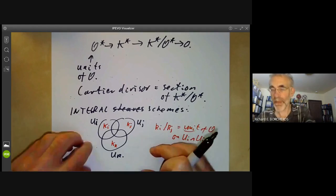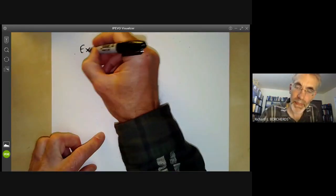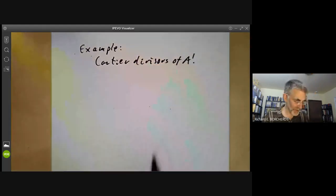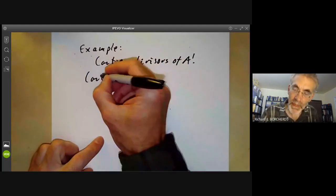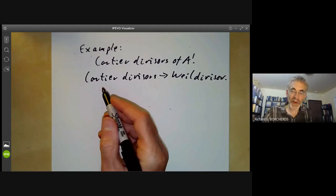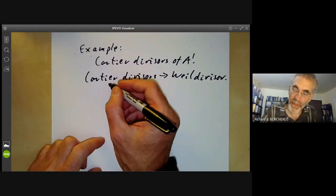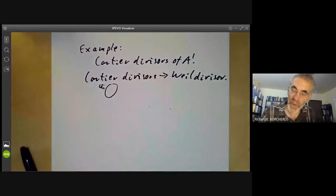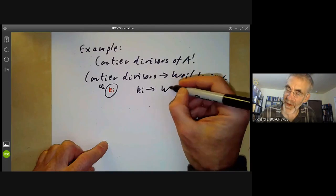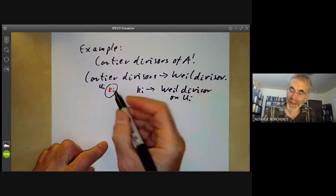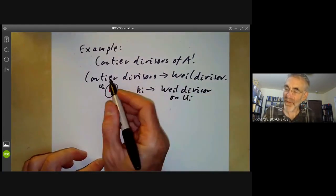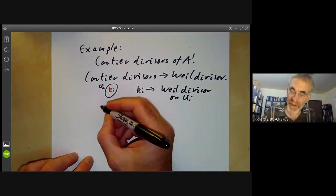For example, let's find the Cartier divisors of an affine line. We have a map from Cartier divisors to Weil divisors, because on any open set U_i, we've got some set K_i. On U_i, you can map K_i to the corresponding Weil divisor on U_i. Since K_i and K_j have the same zeros on U_i intersection U_j, this gives a map from Cartier divisors to Weil divisors. For the affine line, let's see what happens.